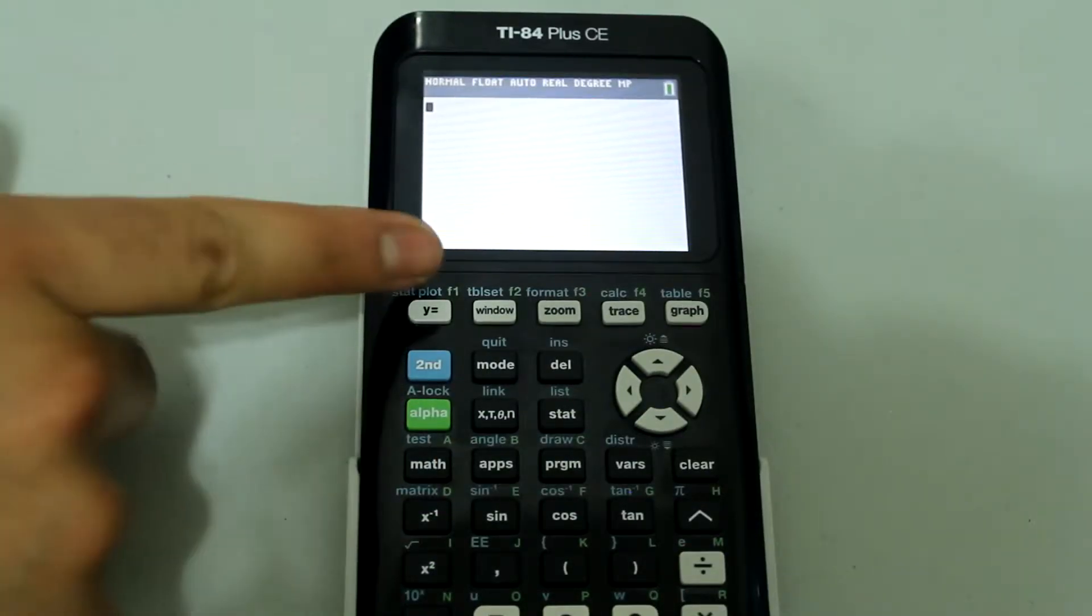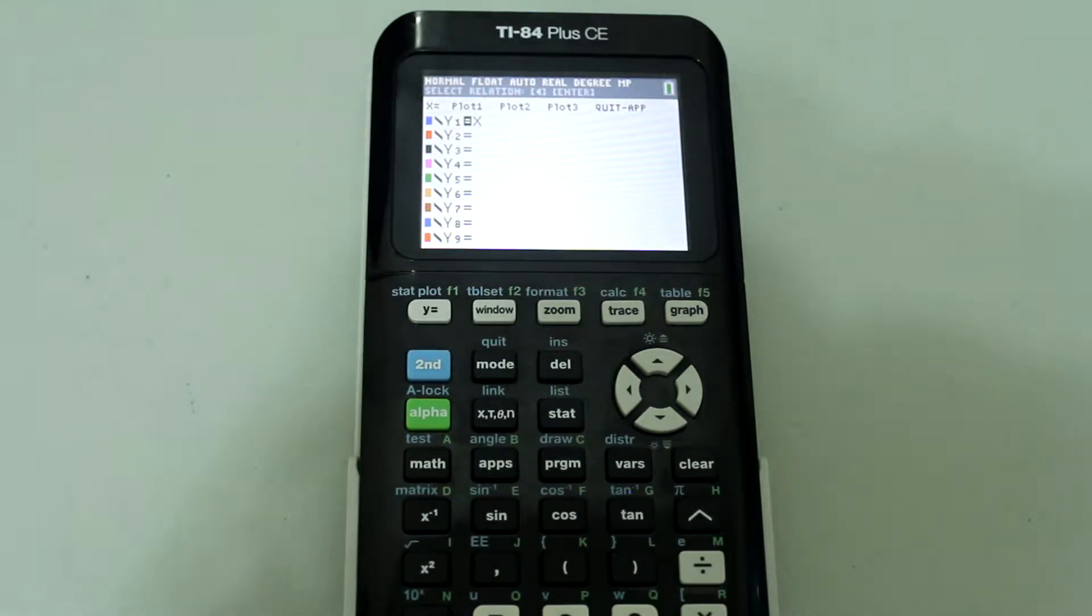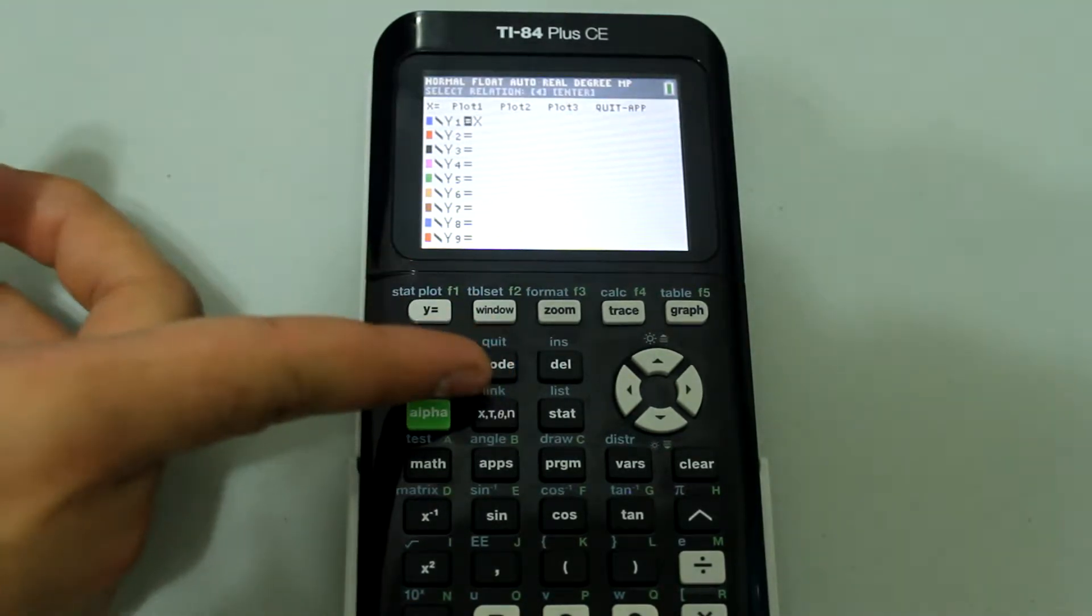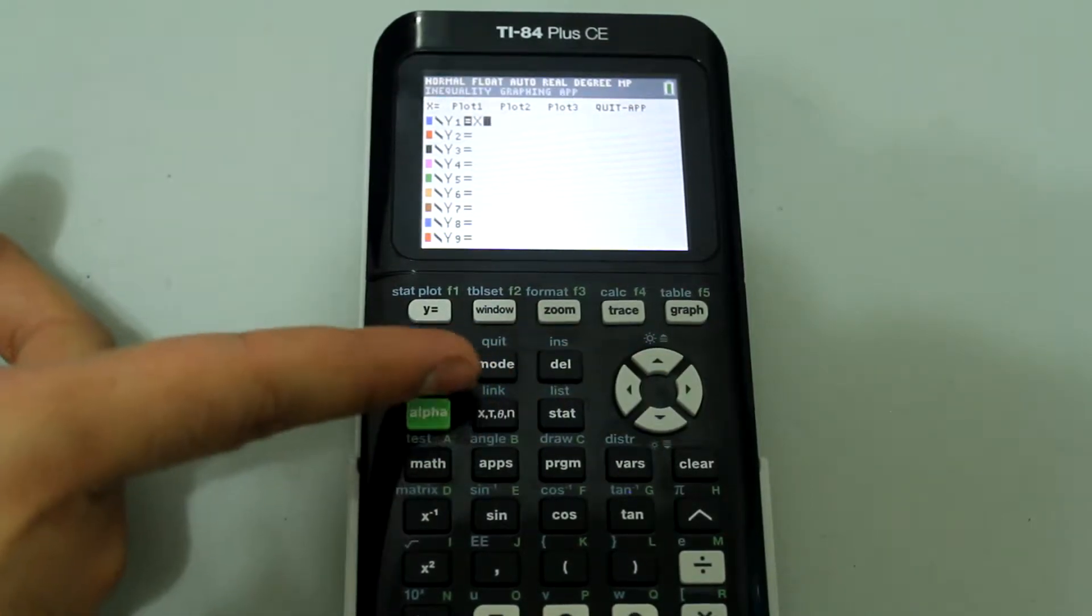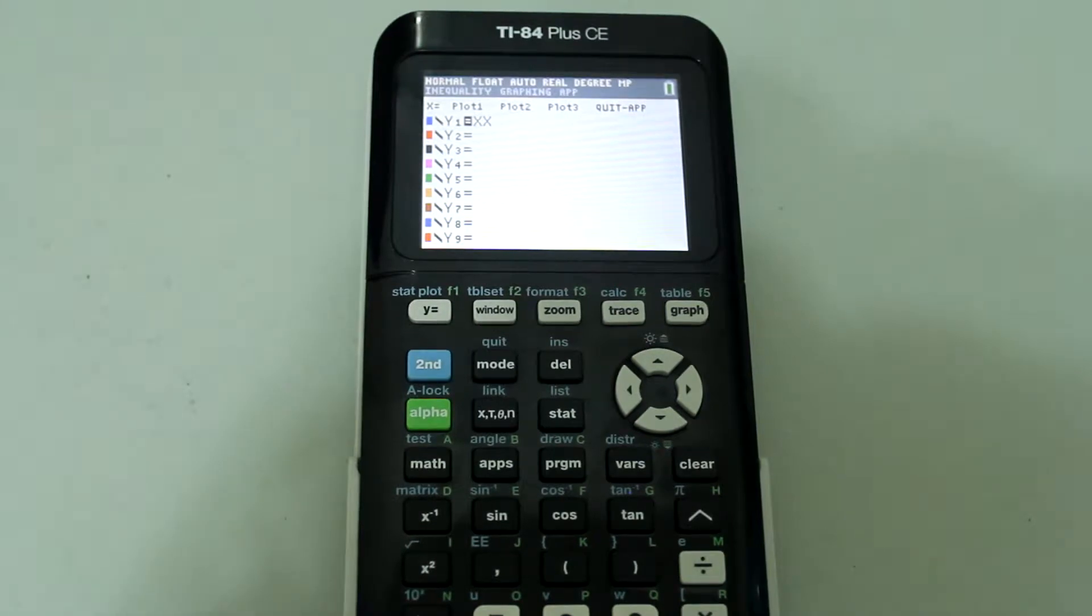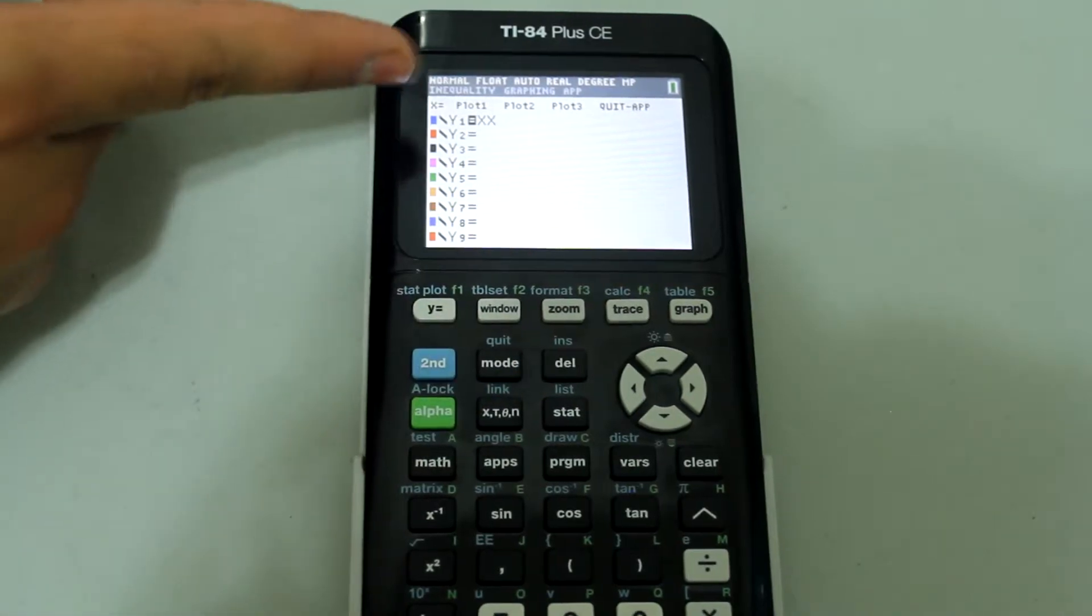If I press the Y equals button, notice this button here that has X, T, theta and N on it. When I press that I get my inputs in terms of X. But to graph polar curves I need my inputs to be in terms of theta and instead of Y equals I need this to be R equals.